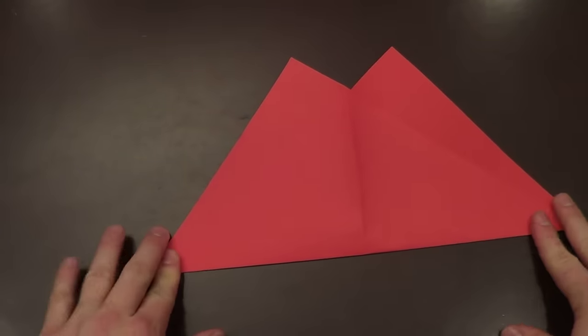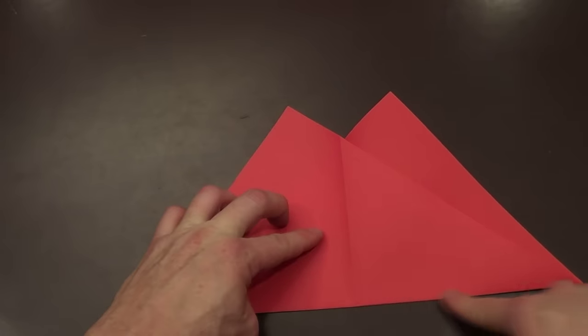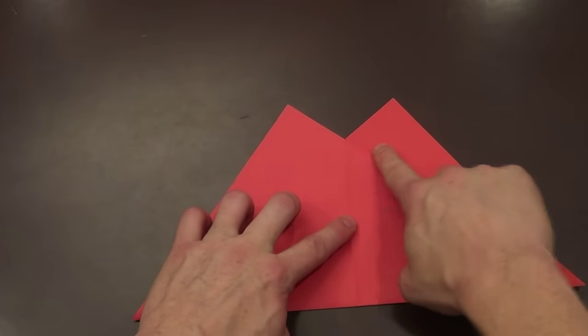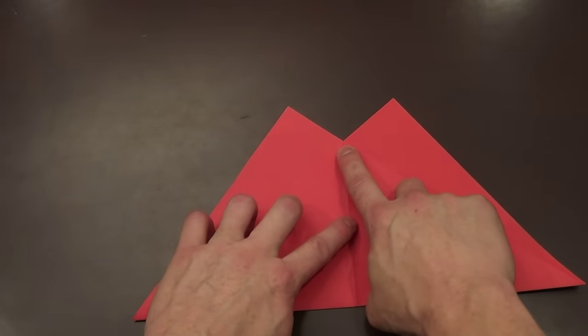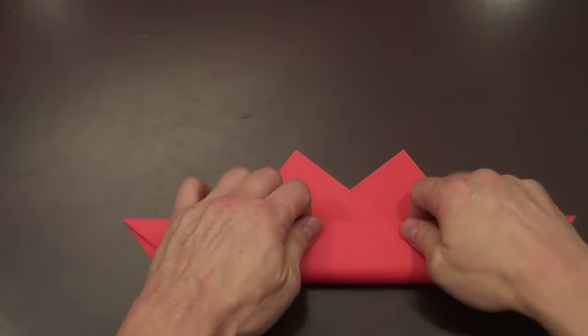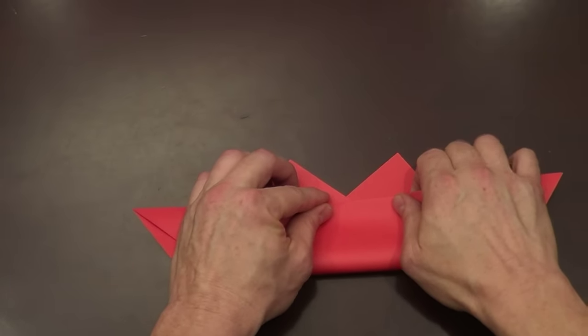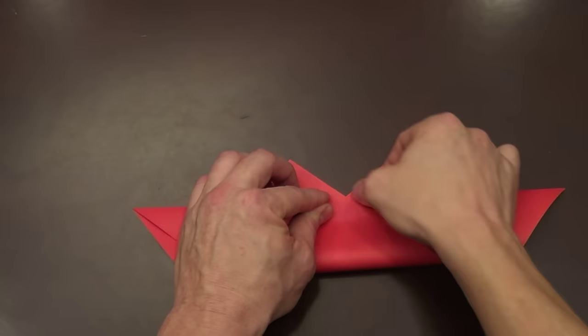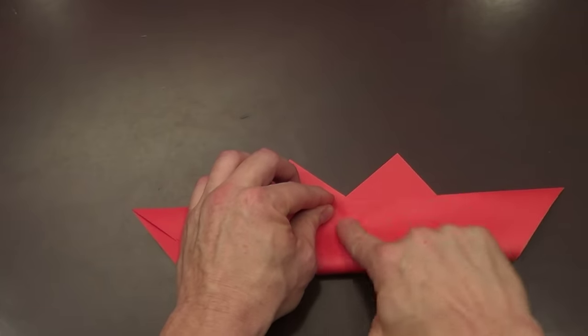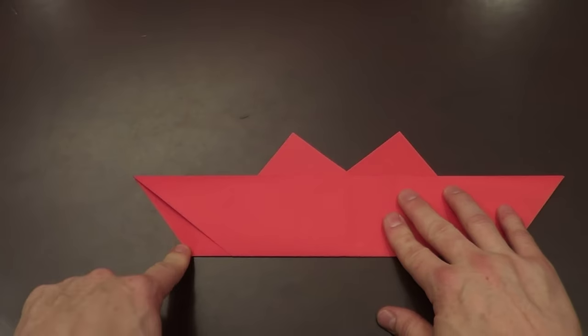Alright, so at this point what we're going to do is I'm going to take this back edge here, and then we're going to fold it right up against here, just before this paper, keeping this crease lined up. So, right there, the crease is lined up with the crease right where the papers come together. I'm going to pull back, and I'm going to crease that down.